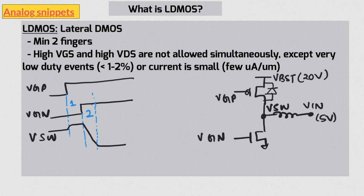It is also acceptable if the current is really small. Typically, a few microamperes for every micrometer of the device width are acceptable. Please consult your technology design rule manual for exact numbers. This is relevant in cases where LDMOS is used as a protection device for current mirrors.